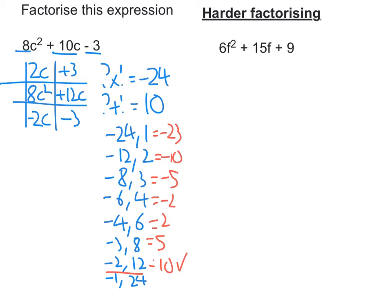8c squared and 12c, well, that's 4c. And negative 2c and negative 3, well, that's negative 1. So my answer to this one is 2c plus 3 and 4c minus 1.